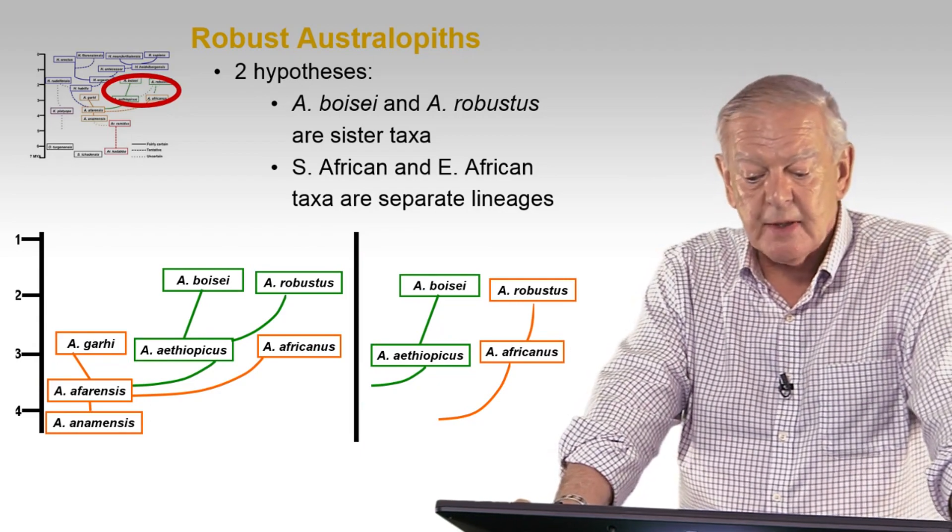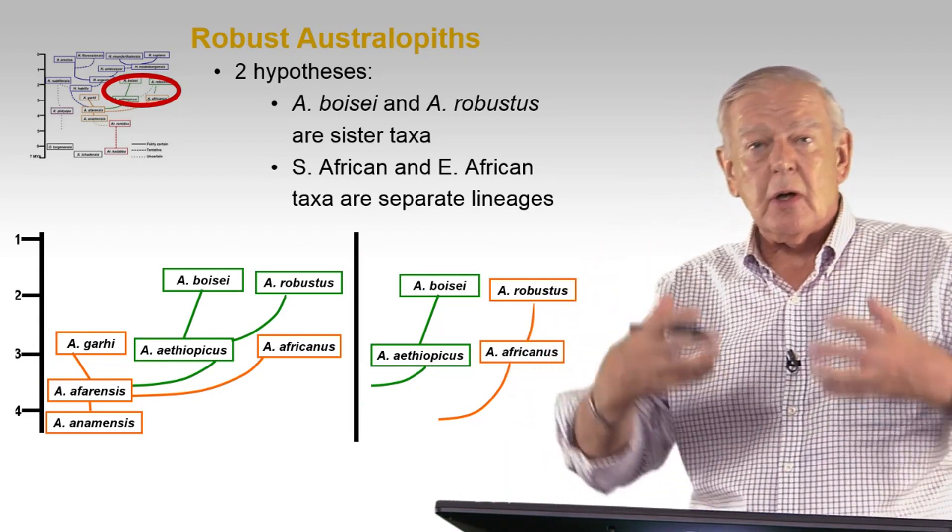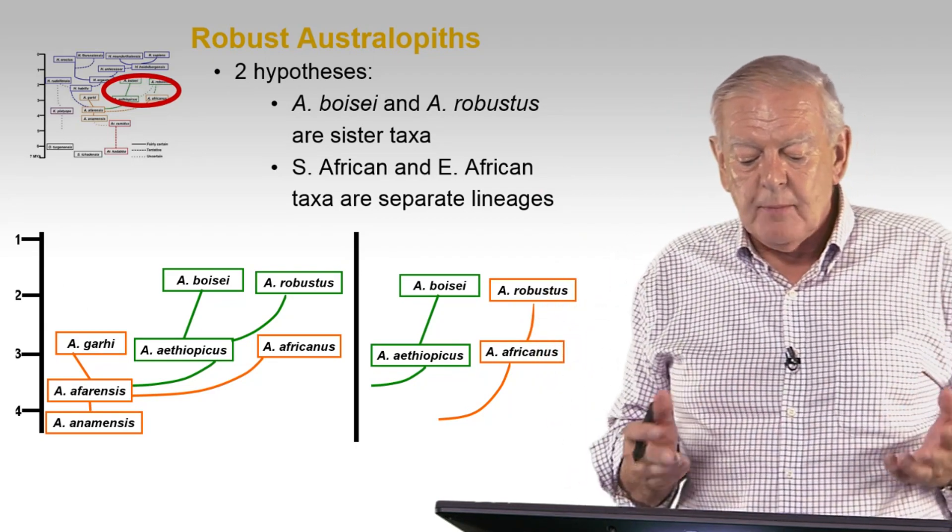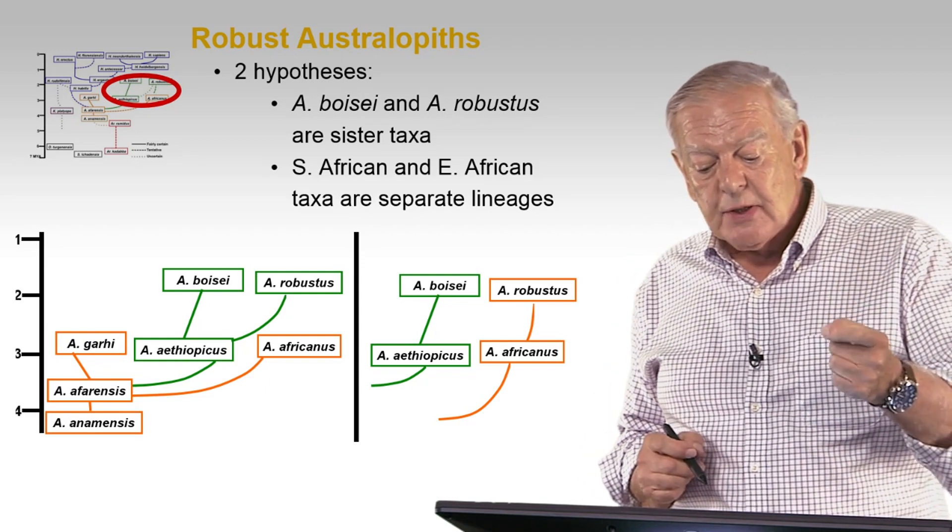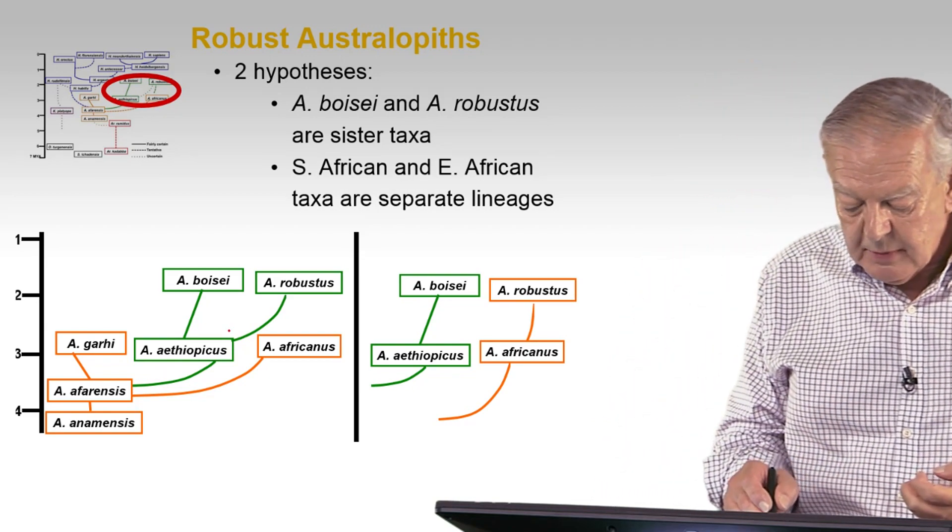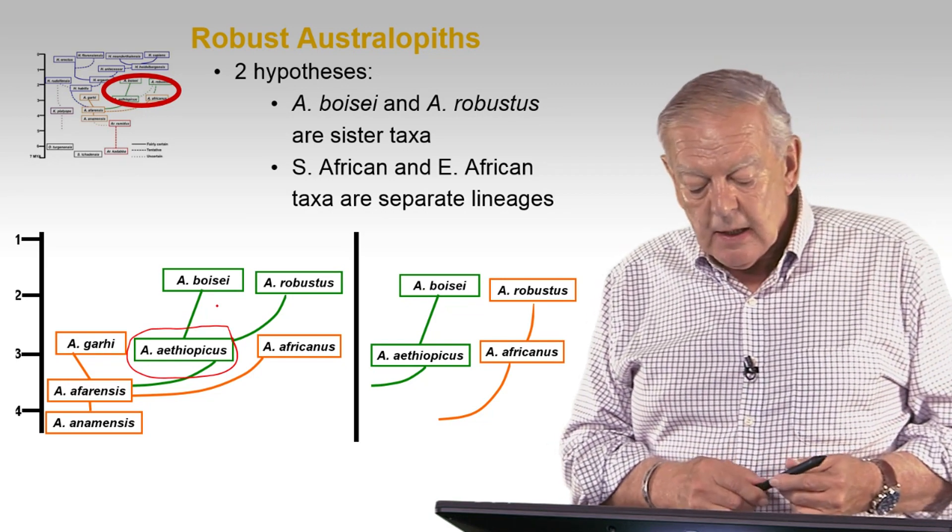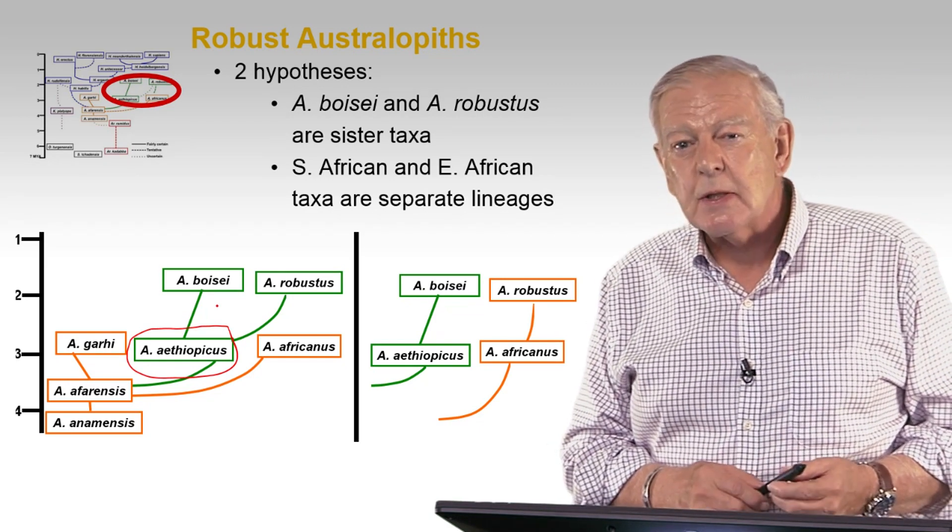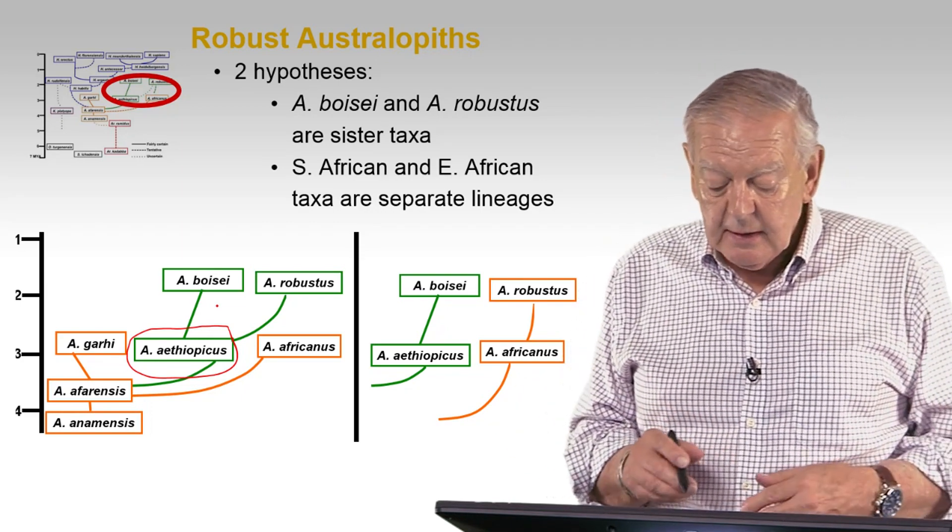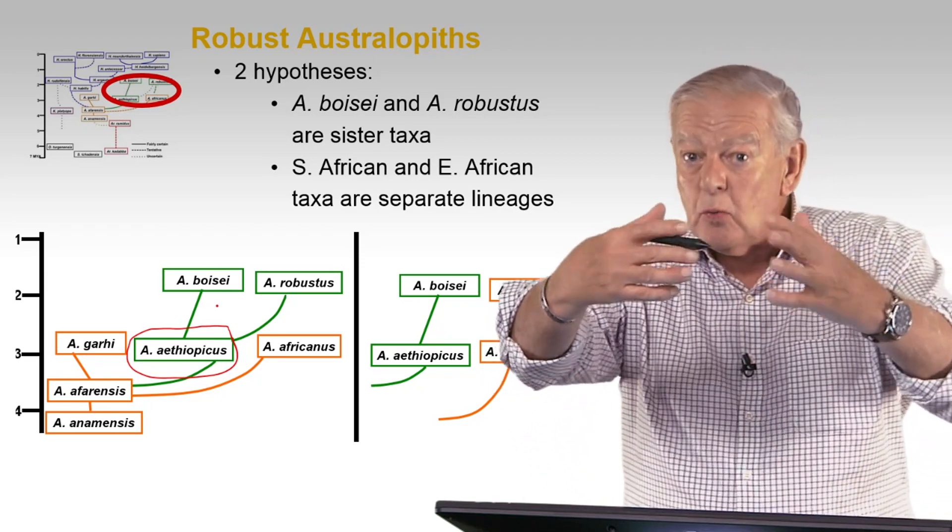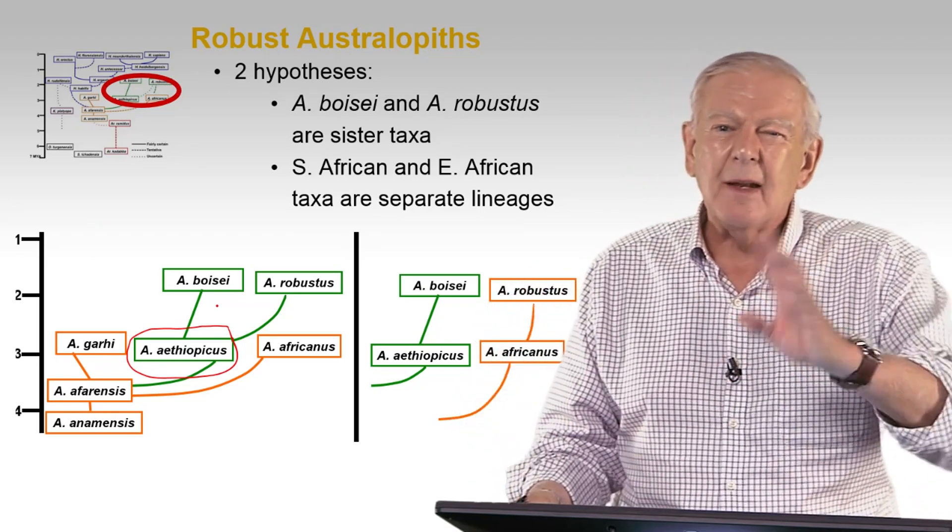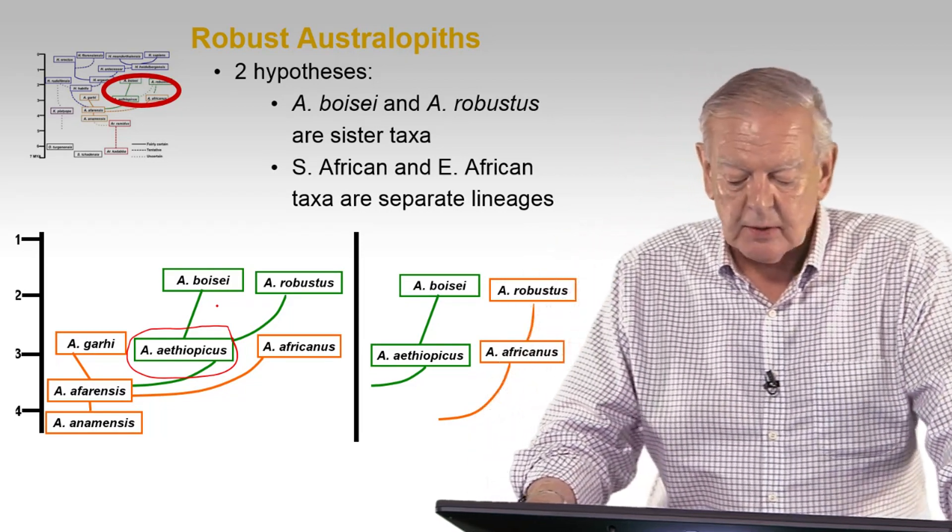Now, the robust Australopiths, as we call them, the ones with the big teeth, the heavy jaws, the enormous muscles, the great food processors of our past, we have two hypotheses. One of them is that Boisei and Robustus are sister taxa, coming out of the same ancestor, which would be coming out of Aethiopicus. Or they are separate lineages with separate ancestors. And it's, at the moment, very difficult to choose between the two. In East Africa, you would have Aethiopicus giving rise only to Boisei, and in South Africa, Africanus giving rise only to Robustus, and if Cediba is a valid species, perhaps, to that. We haven't talked about that here.